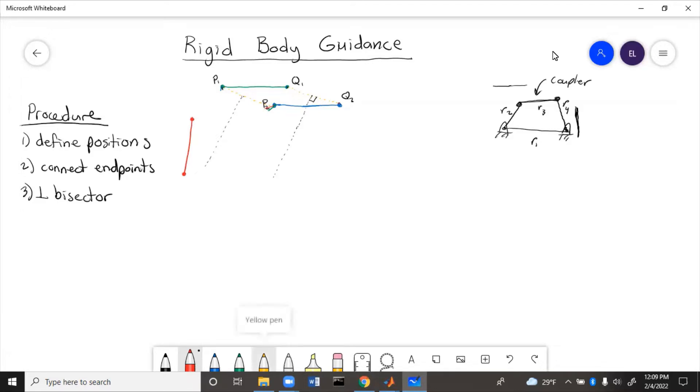So we do the same type of thing. We define the new position, so let's call this P0, Q0, and then we connect the endpoints. So P1 and P2 are already connected. We need to connect P0 and P1. And then Q2 and Q1 are connected, so let's connect Q0 and Q1.